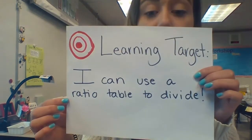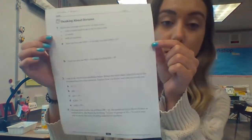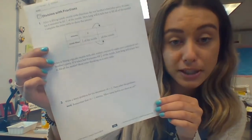Our learning target for today says: I can use a ratio table to divide. The last video you watched was about using arrays to multiply and divide — that is also a model you can use in any of these problems. However, I'm going to teach you to use a ratio table today. You can decide between an array or a ratio table for yourself. This video will help you with thinking about division, page 262. We are going to do number 1A together. Then we will also be doing division with fractions, page 264, doing number 1 together. This is all about using ratio tables to divide whole numbers and to divide fractions.